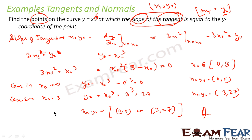If you just understand the question, solving is very simple. The main thing is you should understand what the question is asking. When you read the question, try to circle the main points — here I am talking about points, slopes, tangents. You should not get confused about whether the question is about normal or tangents. Just circle the main points and then try to solve.